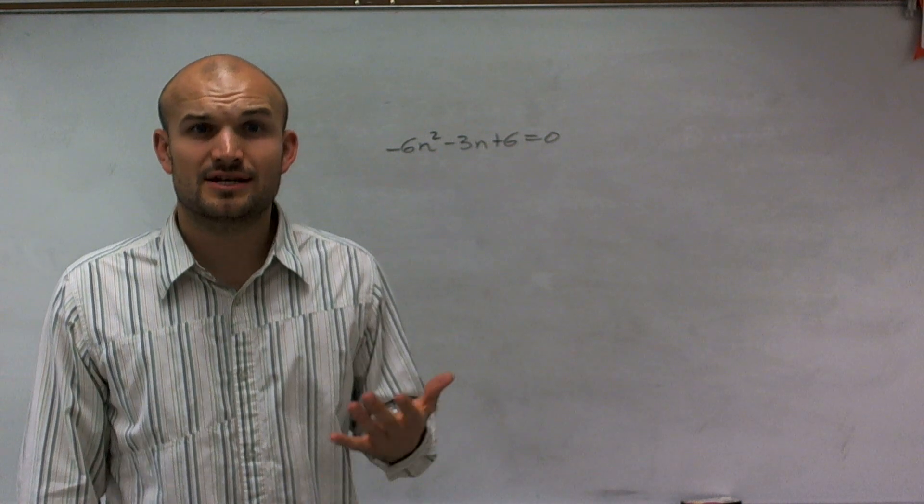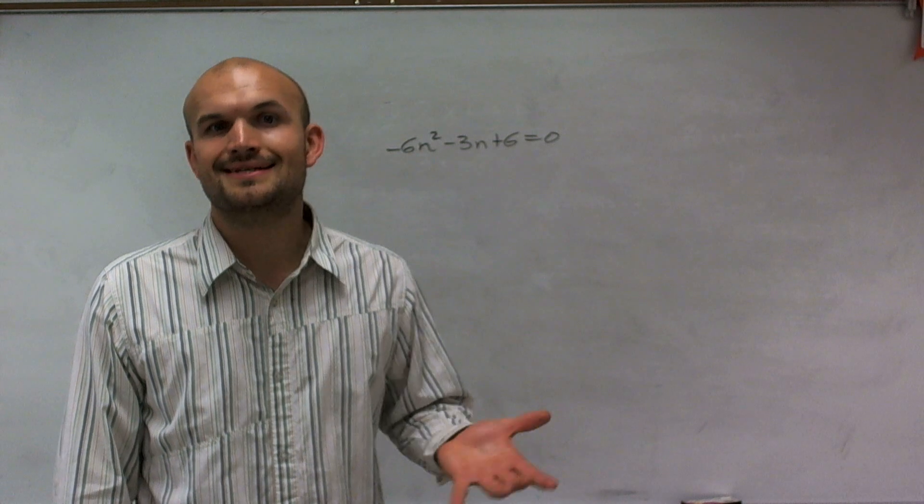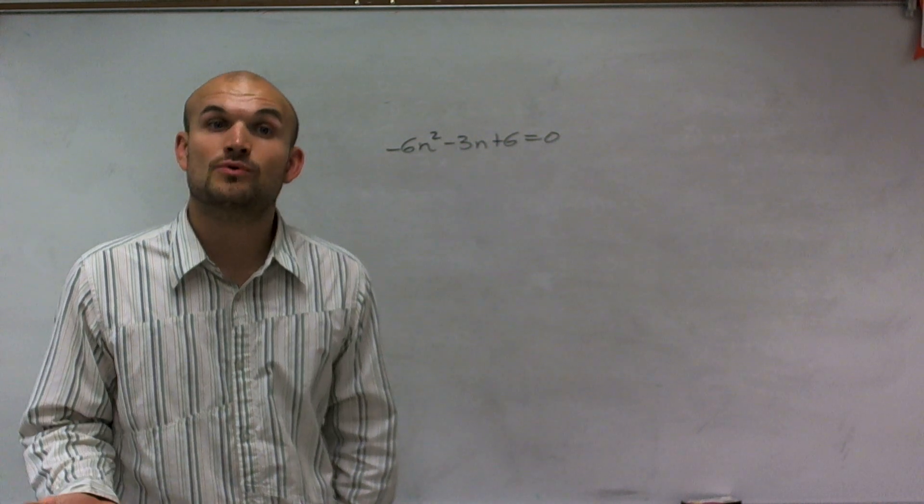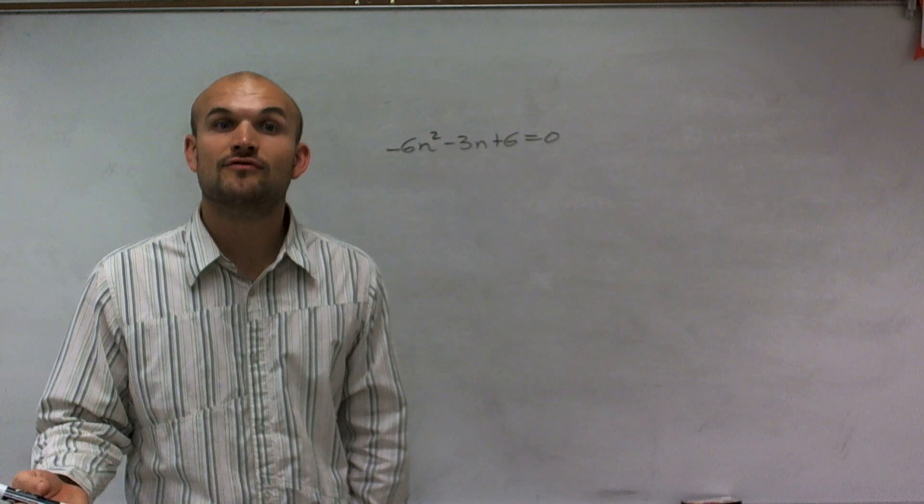What we need to first understand is what is the discriminant and why is it going to help us. Well, the discriminant is what we're going to take the square root of when we look at the quadratic formula.